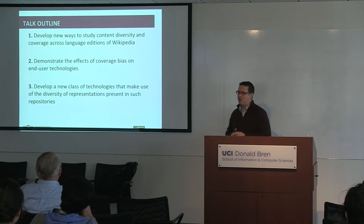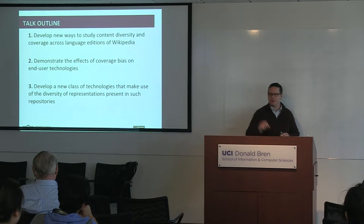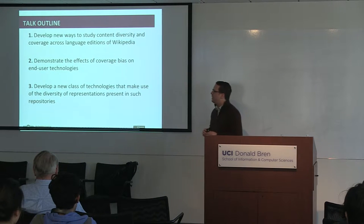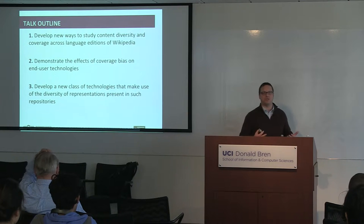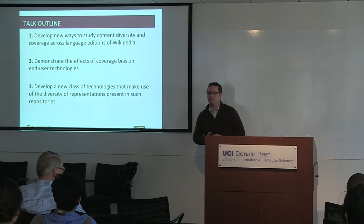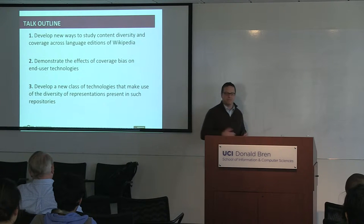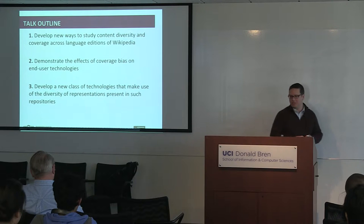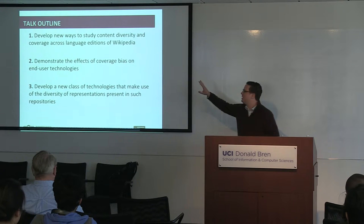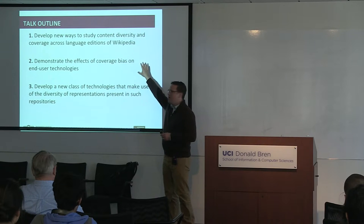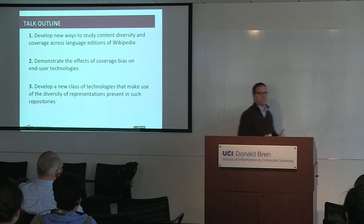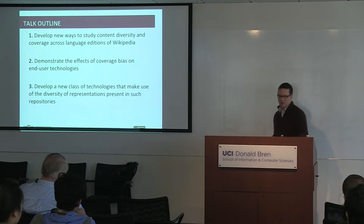The talk covers three things. First, I want to develop new techniques to study content diversity across language editions in Wikipedia. Second, demonstrate what effect potential coverage biases have on end-user technologies. Third, develop what I call a new class of technologies that make use of this diversity of information in new ways. Gerhard Fischer would classify the first two as describing and discovering how things are, and the third part is about how things can be.